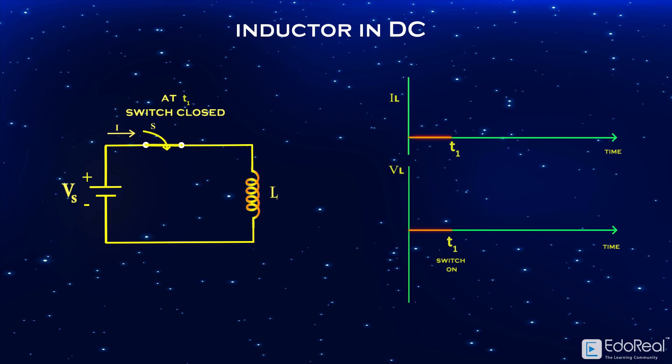When the switch is closed at time t1, the total source voltage will appear across the inductor. There will be a closed path in the circuit.